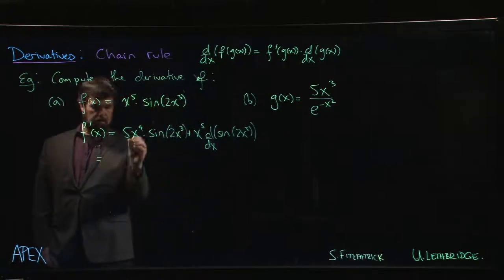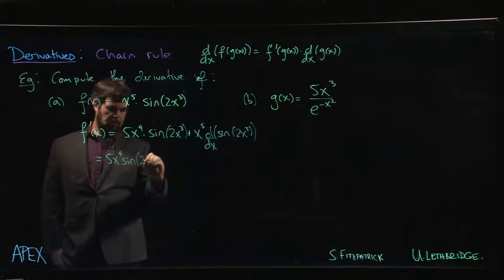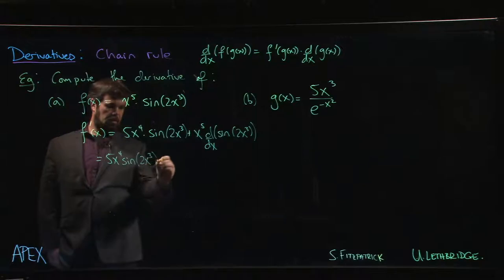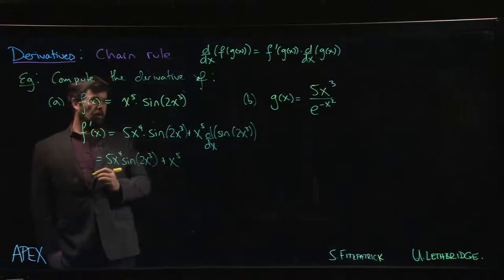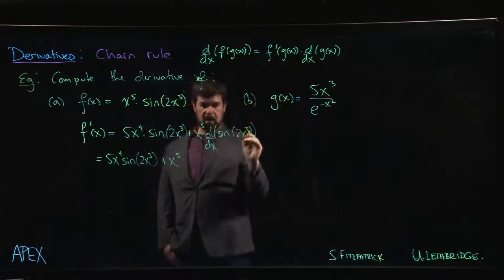So continue on. We're done with that first term, 5x to the fourth sine of 2x cubed. Now, when we proceed to use the chain rule here, remember how the chain rule pattern works.